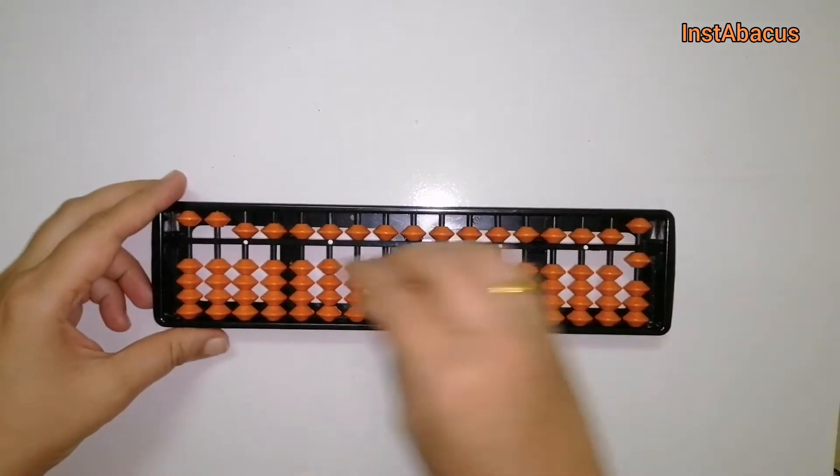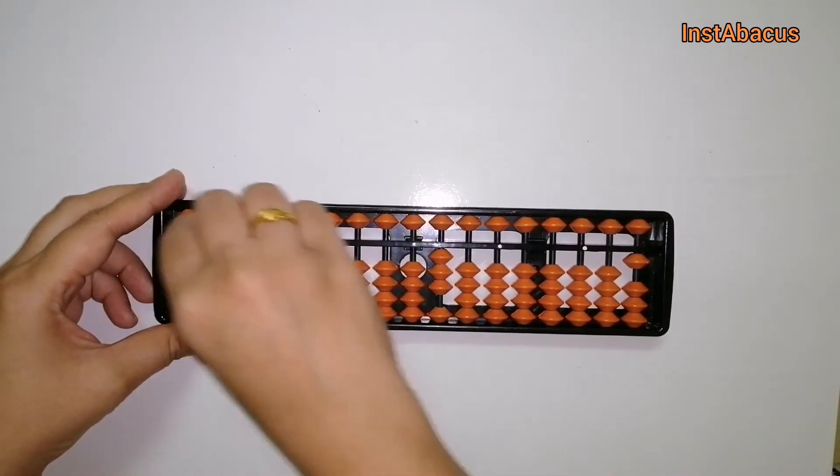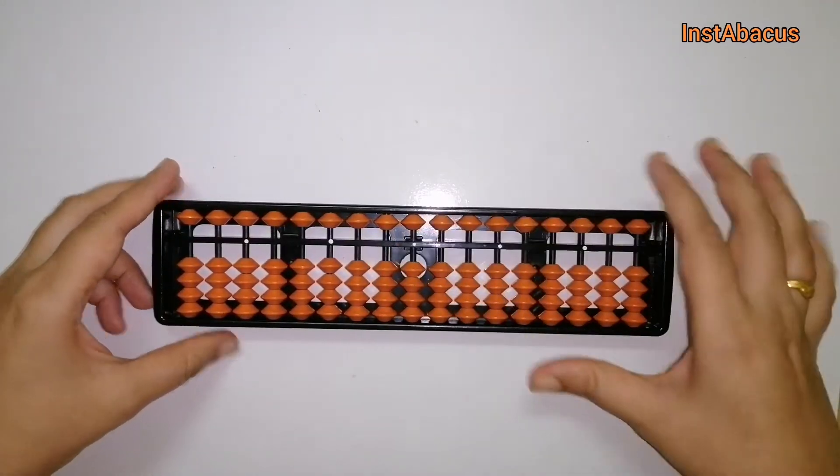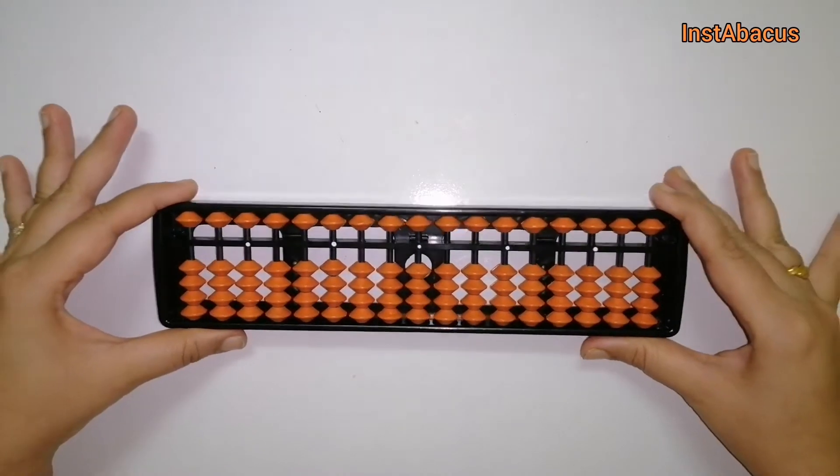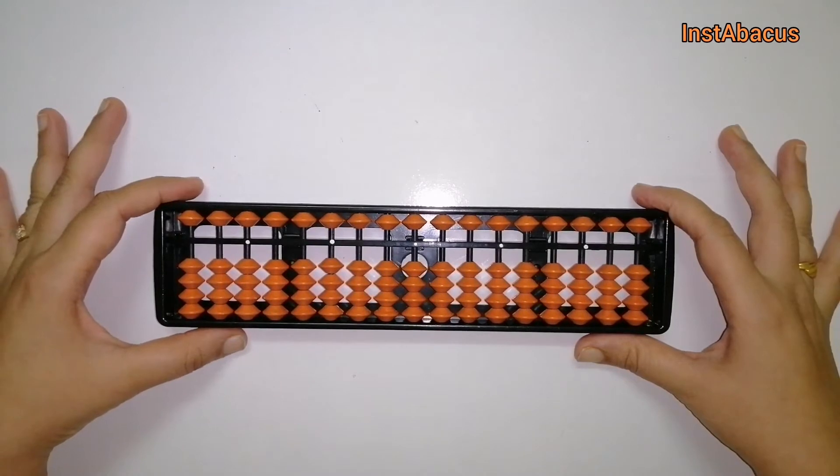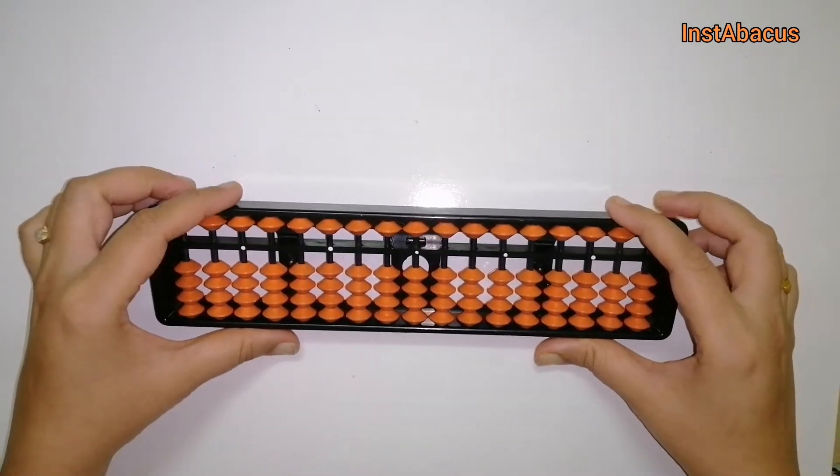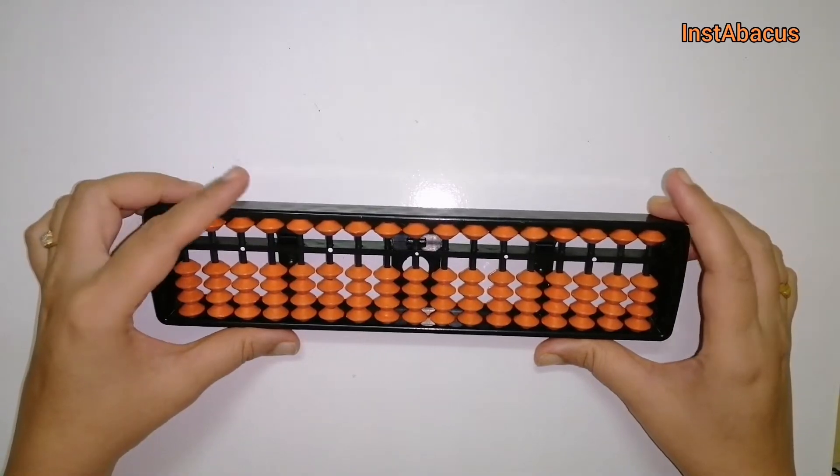For holding it, make sure your abacus tool is always exactly horizontal. If you hold it slightly tilted like this during your calculation, you may end up causing errors due to the downward movement of these heavenly beads.